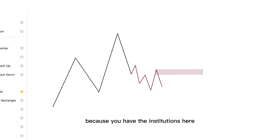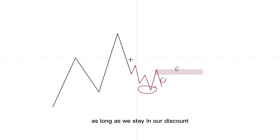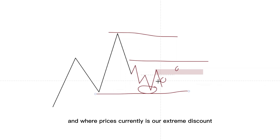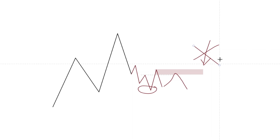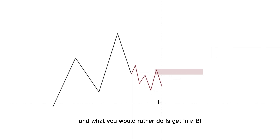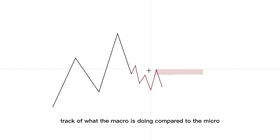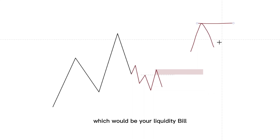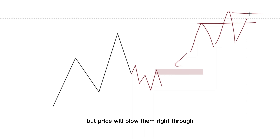You'll be going against all the major institutions. They purchase price on the macro time frame at the extreme. So price could be purchased here, here, or here, as long as we stay in our discount — anything below the 50% is our discount, and where price currently is represents our extreme discount. So you wouldn't want to go against the major institutions as they're purchasing. Taking a sell here thinking price is going to reverse would be super counter trend. What you would rather do is get in a buy and look for a bullish order block to continue above. This is one of the major reasons why a lot of traders lose — they lose track of what the macro is doing compared to the micro. They would see this on the micro and think this is a purge, wait for the return to origin right here, but price will blow them right through.